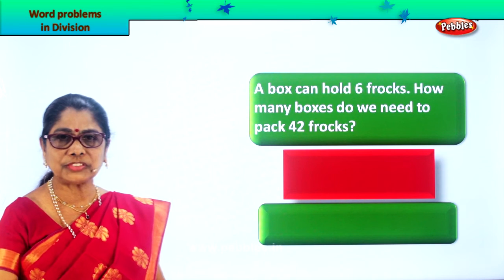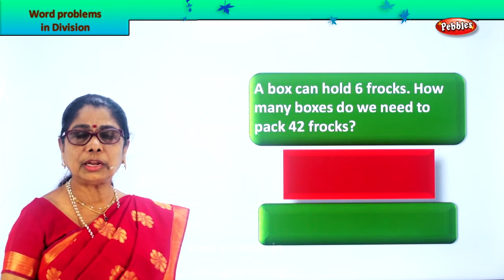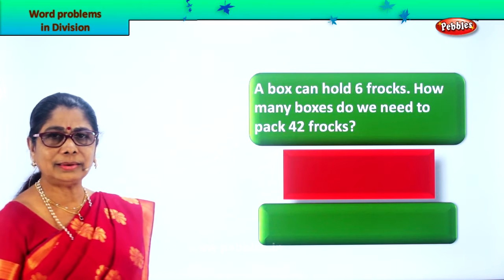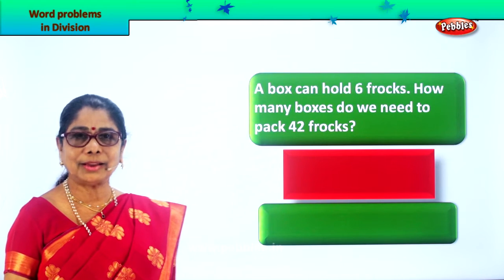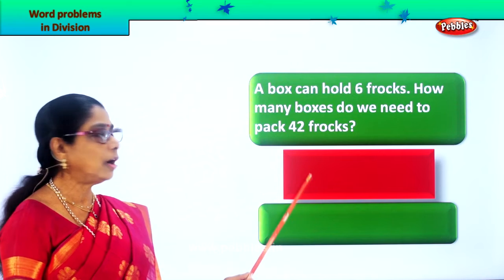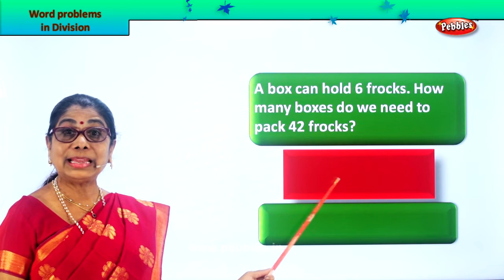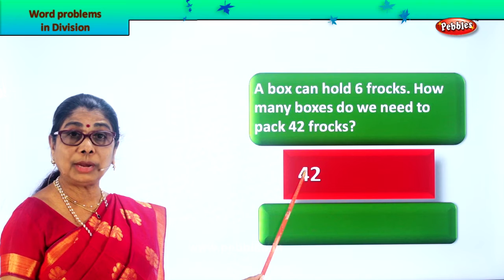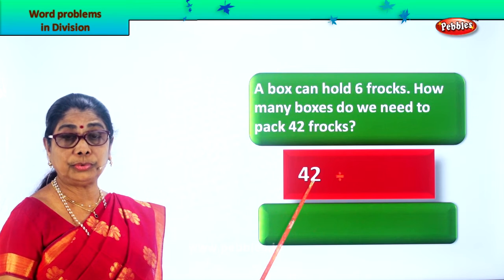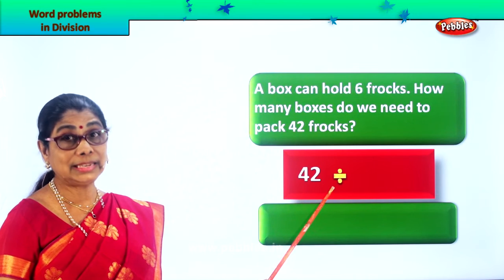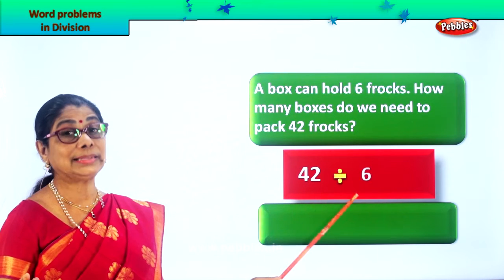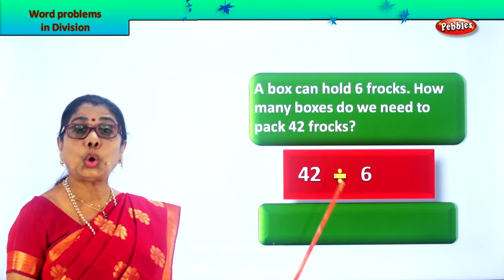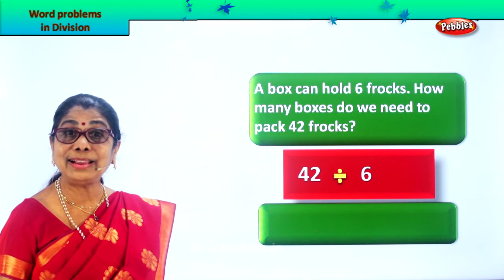So we put 6 frocks into 1 box. Now we are given 42 frocks — how many boxes do we need? Let's put down 42 divided by 6. Total number of frocks: 42 divided by 6, because in one box there are 6. So 42 divided by 6. Now, 6 goes into 42 how many times?